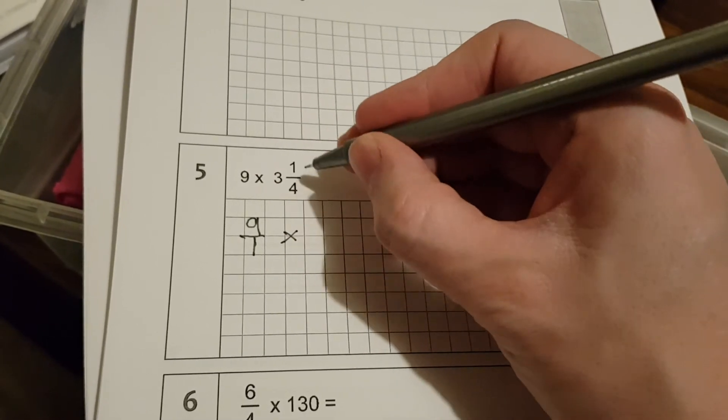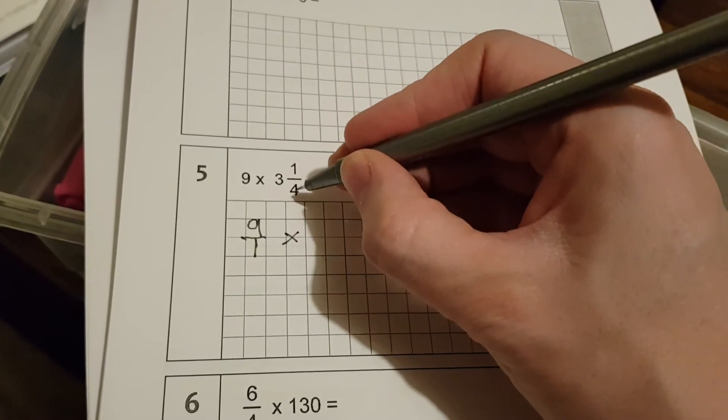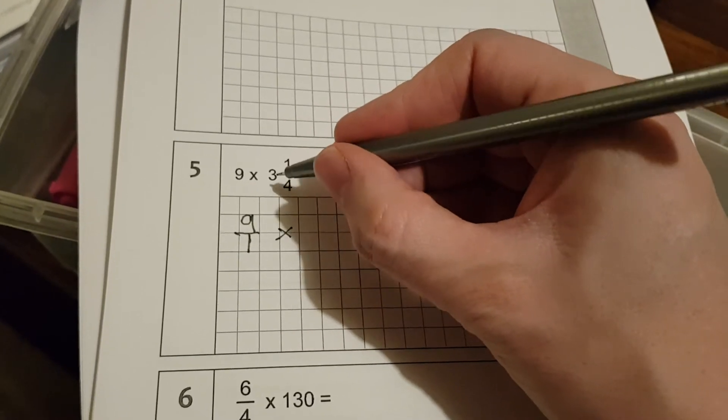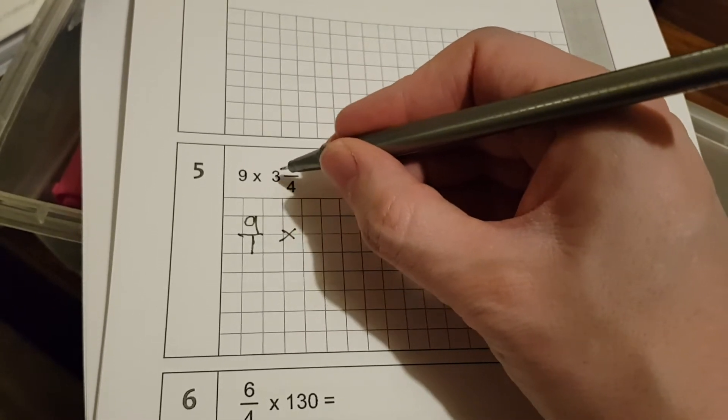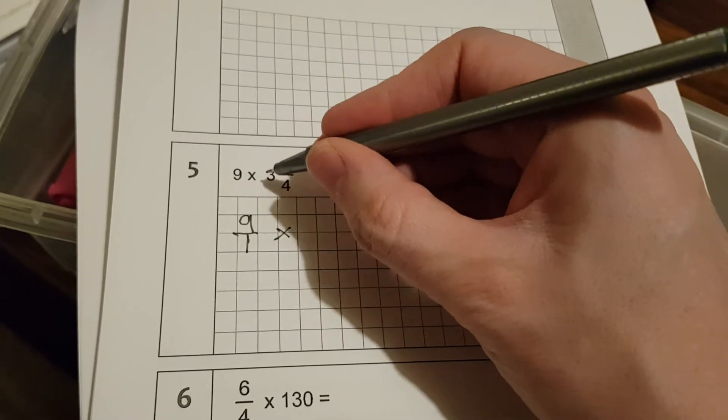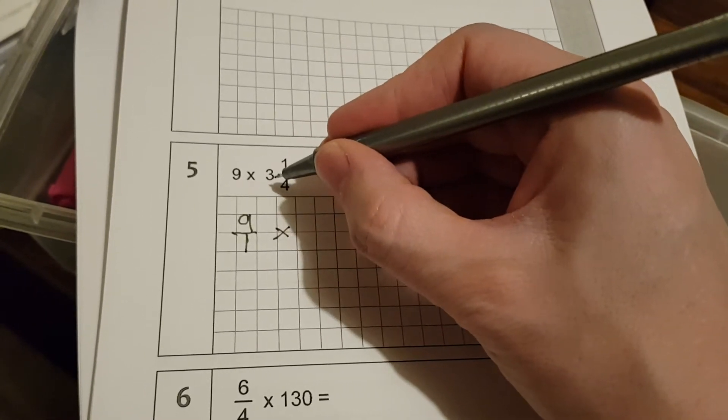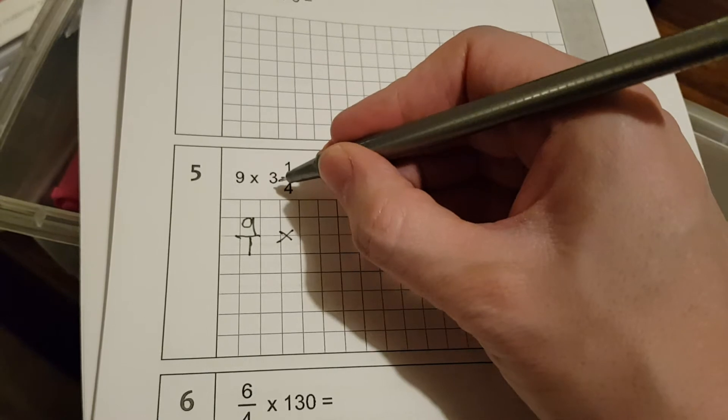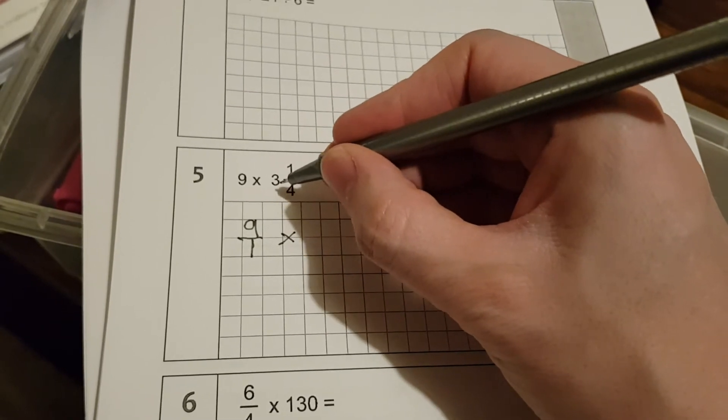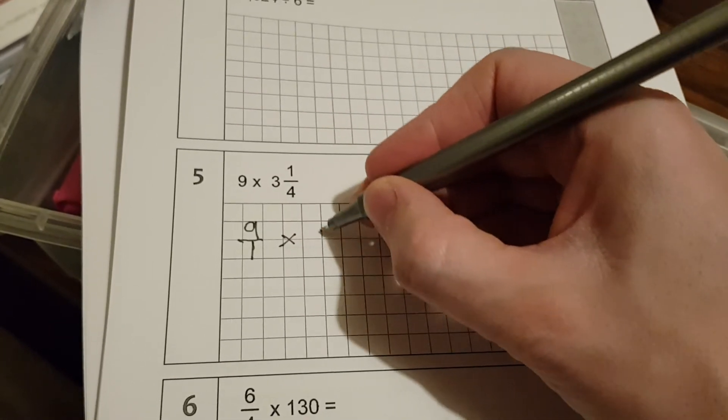Now if we turn this into an improper fraction, we need to think how many quarters is it in total? Well, 1 whole one would be 4 quarters, and we have 3 of them, so that would be 12 quarters, and then we have an extra 1, so that would be 13 quarters.